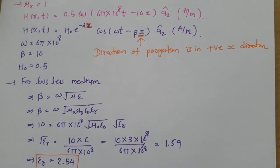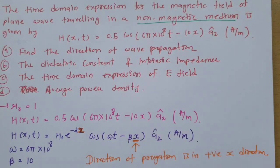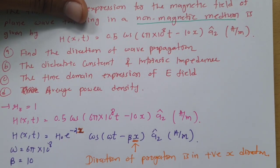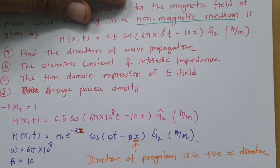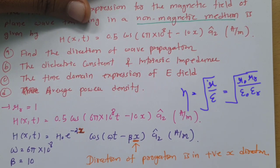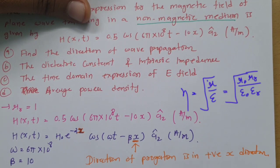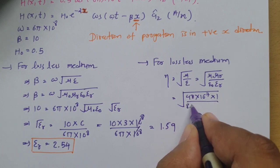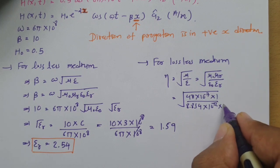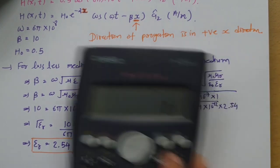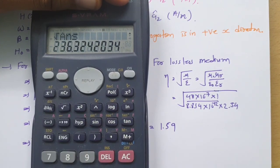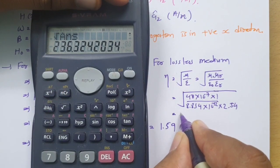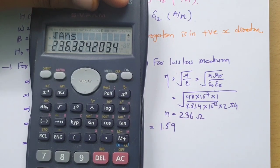For intrinsic impedance, we use η = √(μ/ε) = √(μ₀μ_r / ε₀ε_r). With μ₀ = 4π × 10⁻⁷, μ_r = 1, ε₀ = 8.854 × 10⁻¹², and ε_r = 2.54, solving this gives η ≈ 236.32 ohms. So the intrinsic impedance is approximately 236 ohms.